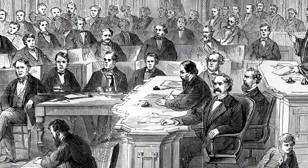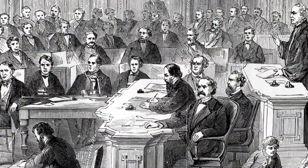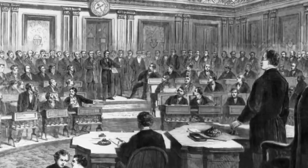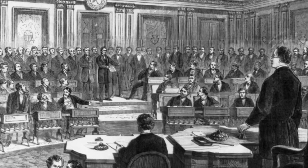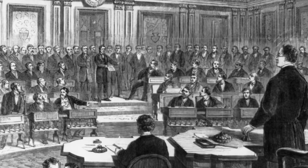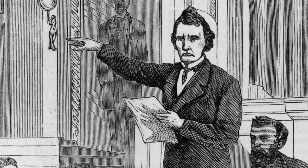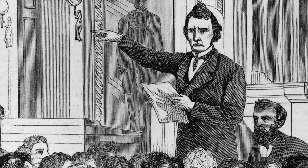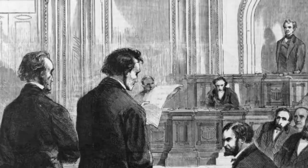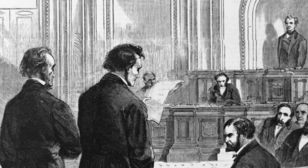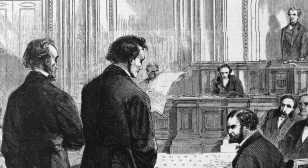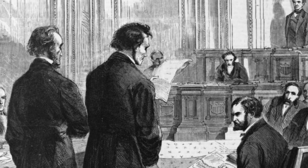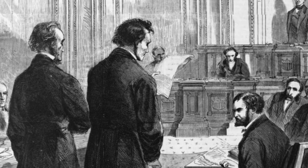The trial began in March of 1868 and lasted 11 weeks. It began with very long speeches from Benjamin Butler, one of the prosecutors for the House, arguing that Johnson had broken the law and violated the Constitution. The defense complicated the trial by arguing that the Tenure of Office Act didn't apply to Stanton, because he was appointed before the act was passed.